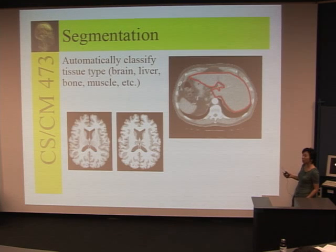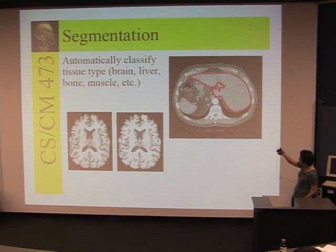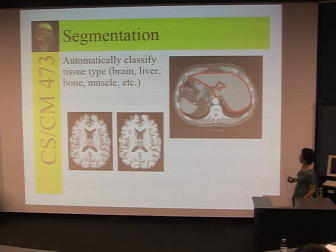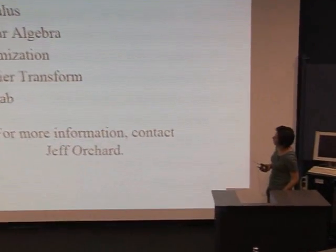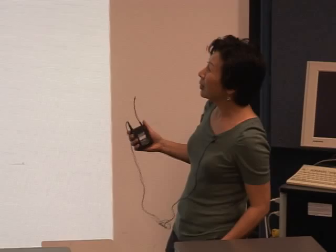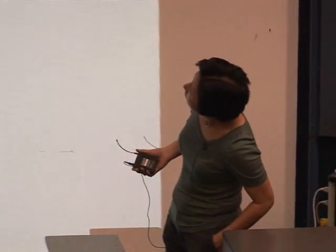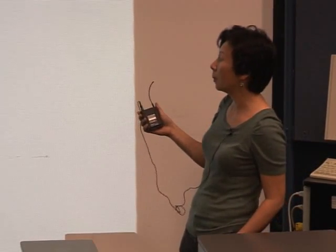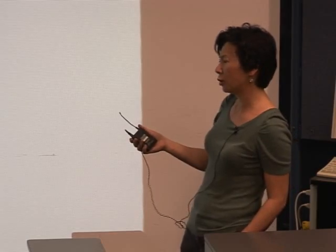Segmentation, as described, is essentially having an automatic way to cut out or segment a particular region precisely, and then perform subsequent analysis to decide its medical importance. This course will require you to be quite familiar with calculus and linear algebra. You'll also use optimization tools, solving least squares problems and Fourier transforms. Most computations will be done in MATLAB. This course is offered by Professor Jeff Orchard.